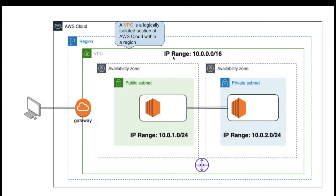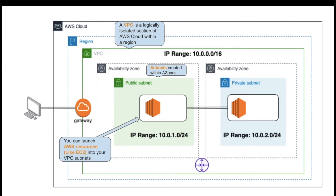Each VPC has a CIDR block, or you can say an IP range. You can specify an IP address range for the VPC — we are using 10.0.0.0/16 IP range. Within a region we have availability zones, and you can use availability zones within your VPC by creating subnets and assigning those subnets to an availability zone. In a single availability zone we can create multiple subnets, but we cannot span a single subnet to multiple availability zones. The resources in the public subnet will have an IP range of 10.0.1 and within the private subnet will have an IP range of 10.0.2.